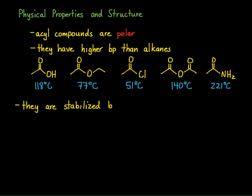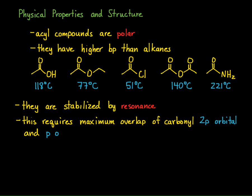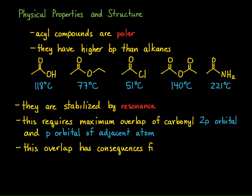The next physical property we have to think about is stability. Acyl compounds are stabilized by resonance, and that typically seems to be a theme around carbonyl compounds and acyl compounds. When we think about resonance stabilization, it requires maximum overlap of the carbonyl 2p orbital with the p orbital of the adjacent atom. This overlap has consequences for both structure and reactivity.